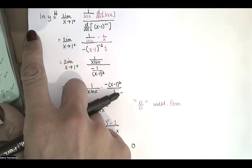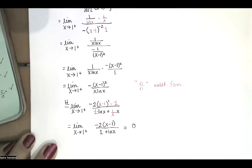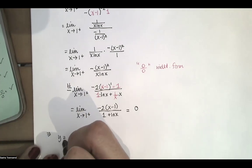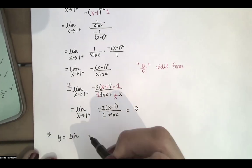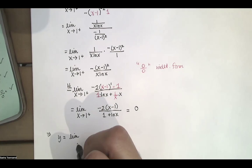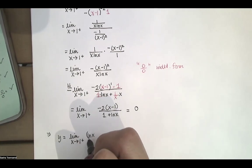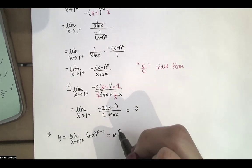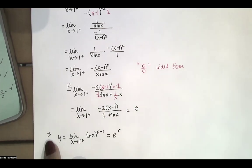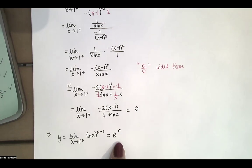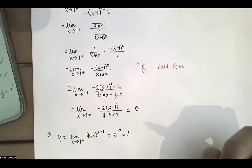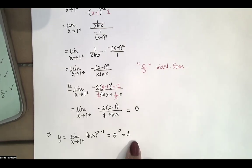So the natural log of y is equal to 0, which means that y — which was the limit as x approaches 1 from the right of natural log of x raised to the x minus 1 — is equal to e to the 0. Because we had log of y equals 0, we exponentiate both sides and find that the limiting value of this function is 1.